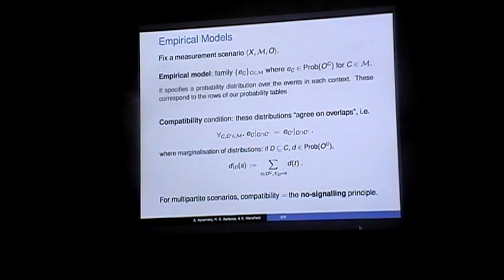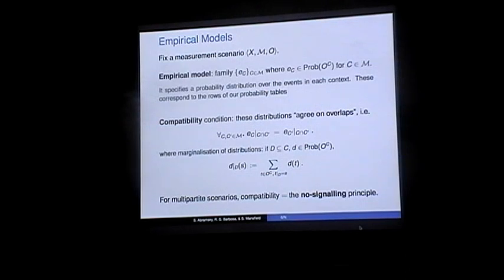For example, if Alice measures A1 and Bob could choose B1 or B2, if one context is {A1, B1} and the other is {A1, B2}, the fact that the probabilities for Alice when you marginalize over Bob are the same means there cannot be any signaling — Bob cannot signal to Alice by his choice of measurements.